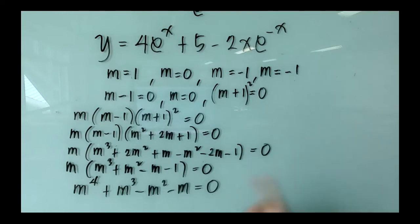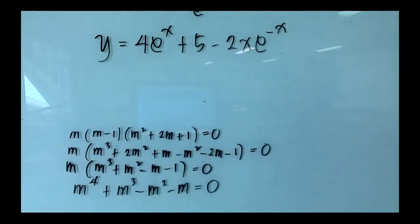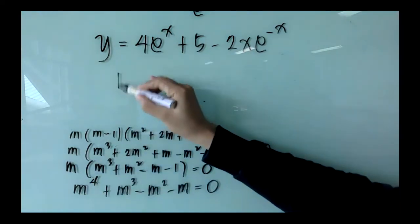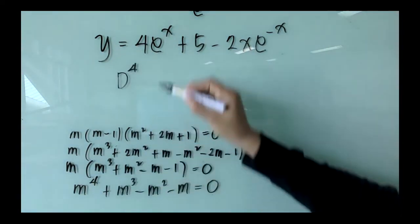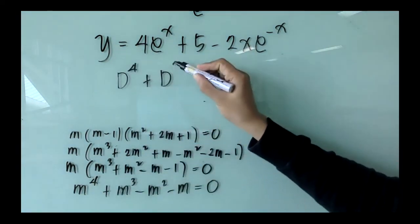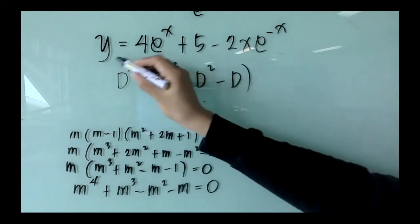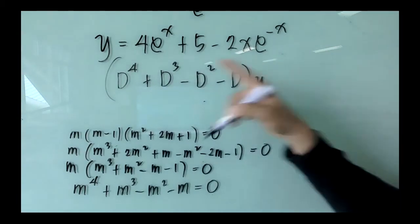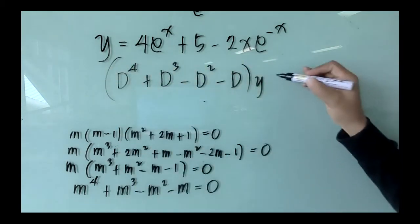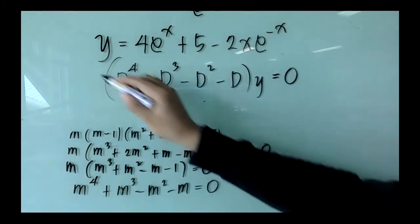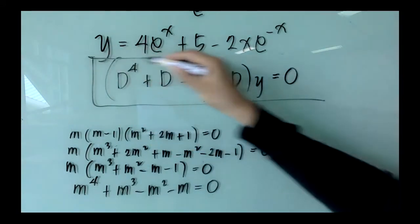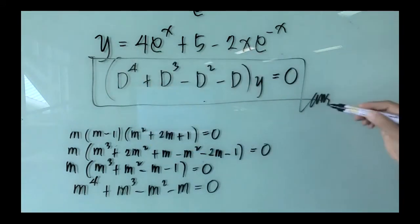We replace m by d, the differential operator. So the equation becomes d⁴ + d³ - d² - d applied to y equals 0. This is now a homogeneous linear differential equation with constant coefficients.